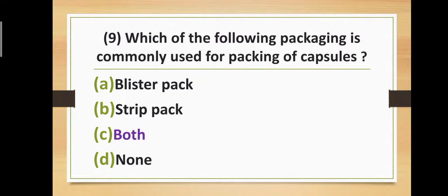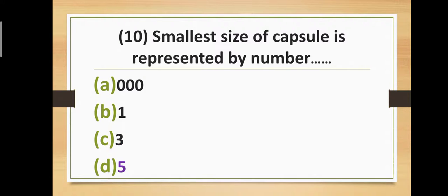Question number ten: The smallest size of capsule is represented by a number — Option A: triple zero (000). Option B: one. Option C: three. Option D: five. The correct answer is option D — five. The smallest size of capsule is represented by the number five.